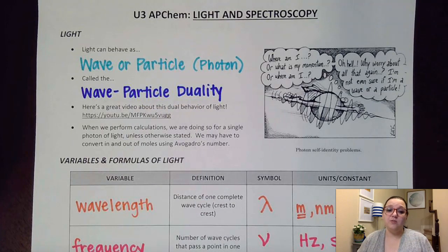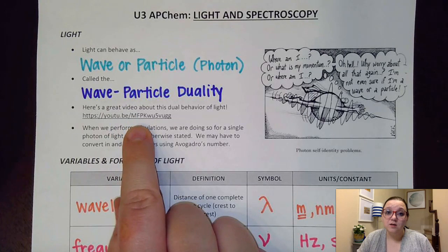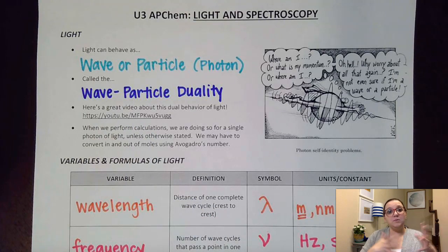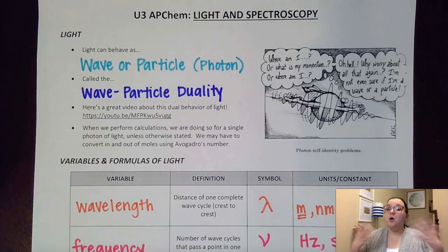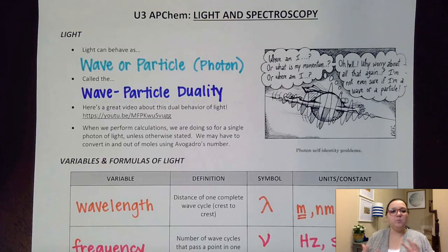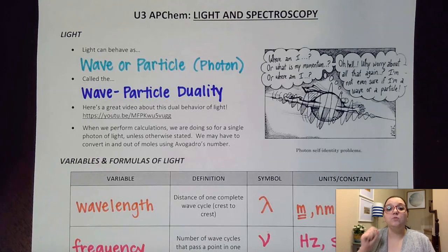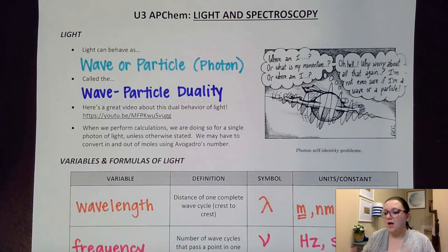There's lots of information out there about that wave-particle duality. There's actually a really good video clip I will link in my playlist where he talks about some of the experiments that led to the conclusions about it. What I want us to understand is that the calculations we're going to do — the variables we use to explain light's behavior — kind of take on a little bit of both characteristics. For example, wavelength and frequency deal more with the wave nature, while energy calculations are performed for a single photon. So depending on the calculation, I'm thinking about light more as a wave or as a particle.